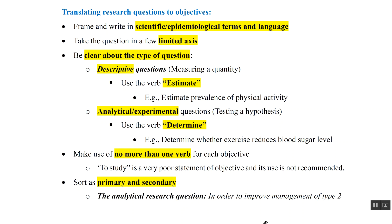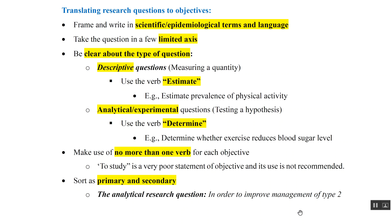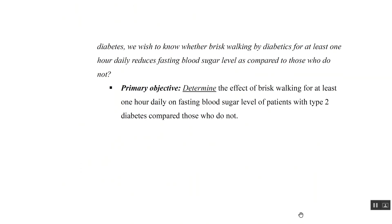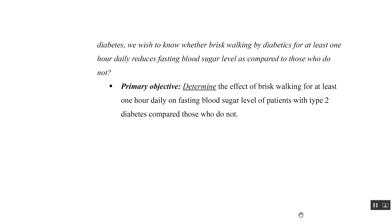Classify your objectives as primary and secondary if there are many objectives. For example, an analytical research question: 'In order to improve management of type 2 diabetes, we wish to know whether brisk walking by diabetics for at least one hour daily reduces fasting blood sugar level compared to those who do not.' The primary objective becomes: 'To determine the effect of brisk walking for at least one hour daily on fasting blood sugar level of patients with type 2 diabetes compared to those who do not.'